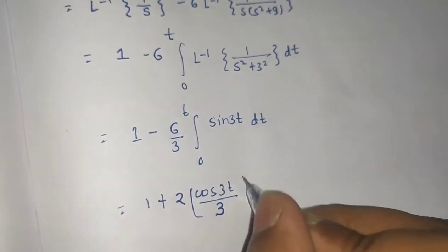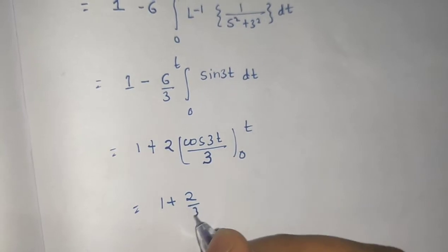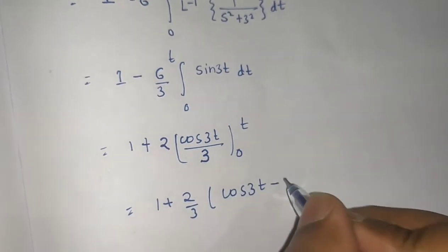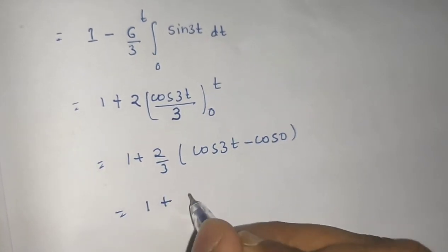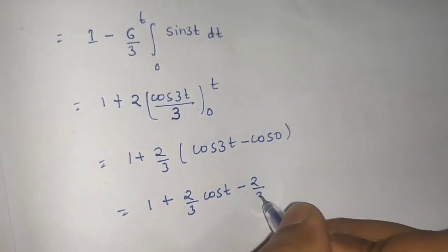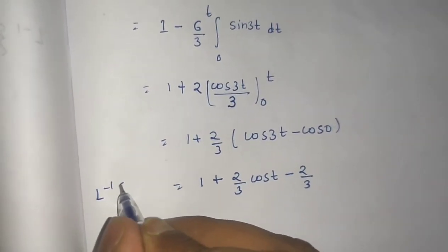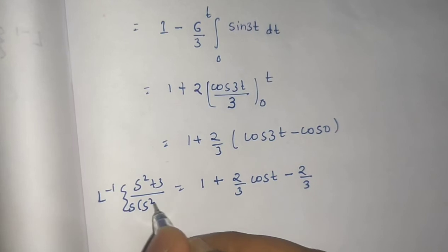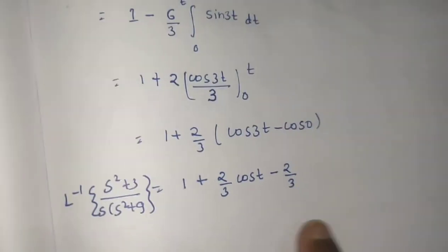We can take the 3 out, leaving 1 plus (2/3) times cos(3t), minus cos(0). Since cos(0) = 1, this gives 1 plus (2/3)cos(t) minus 2/3. So the final answer for the Laplace inverse of (s² + 3) divided by s(s² + 9) is 1 + (2/3)cos(3t) − 2/3.